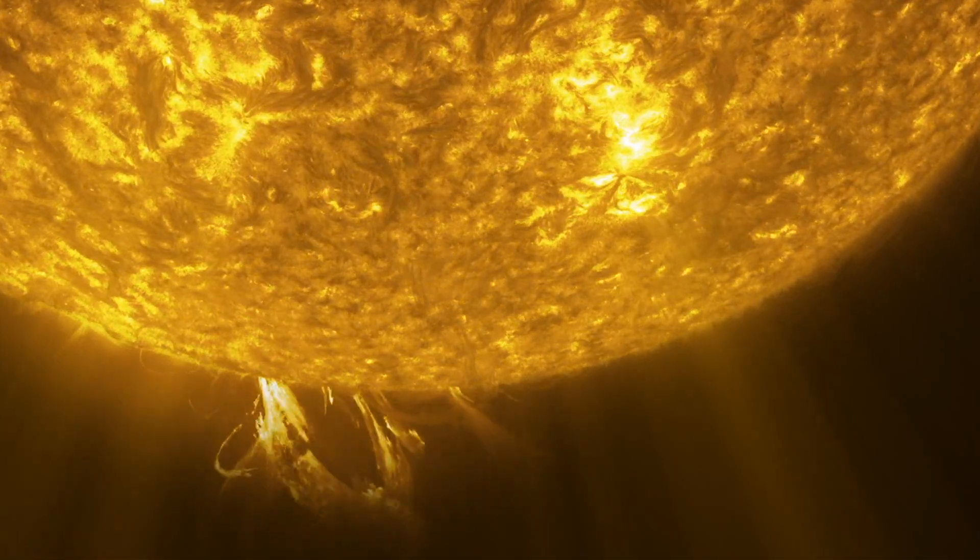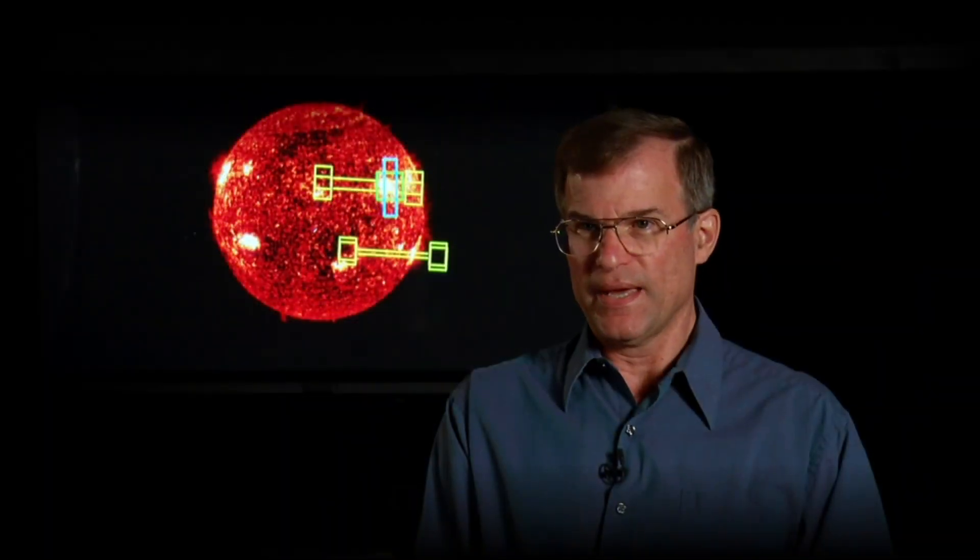This has been a mystery for quite a while. According to the nanoflare heating theory of the solar corona, there are very many low energy nanoflare heating events. Energy is released in a nanoflare. It heats the local plasma to a very high temperature, around 10 million degrees.